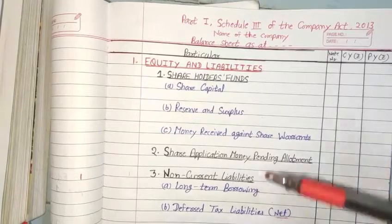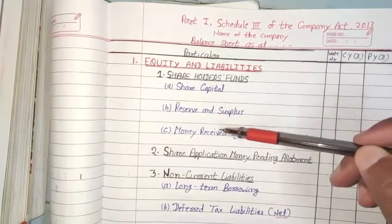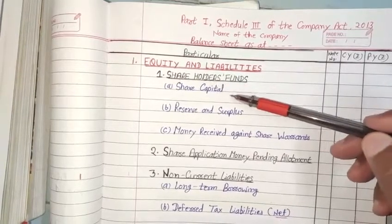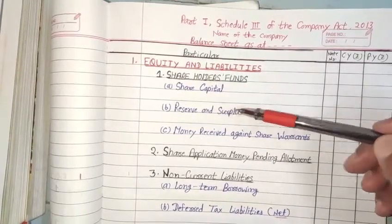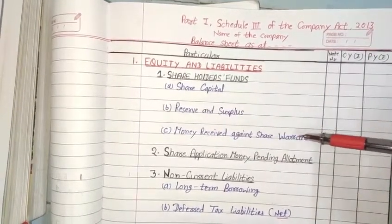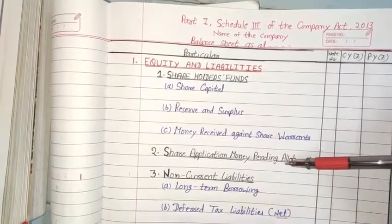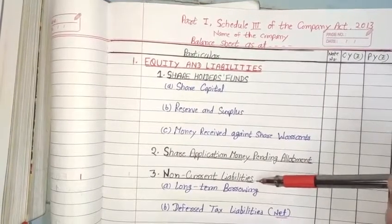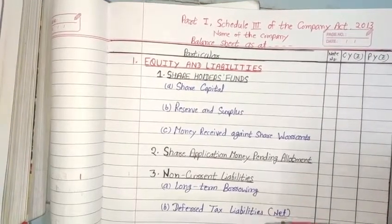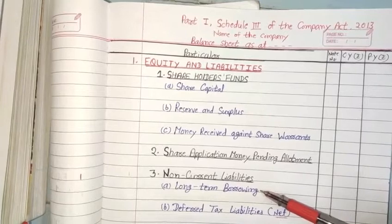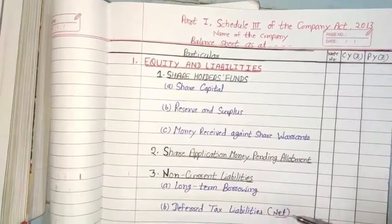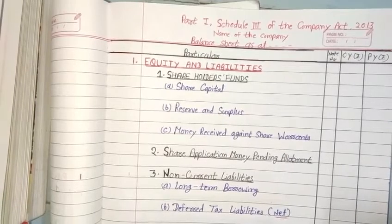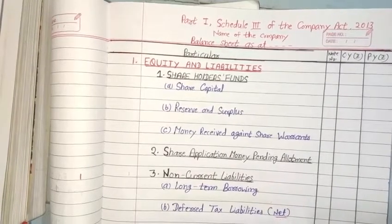After that, we have seen there are three sub-headings of Shareholder Fund: Share Capital, Reserve and Surplus, and Money Received against Share Warrant. There is no sub-heading of the second point. The third point is Non-Current Liability, which has four sub-headings: Non-Current Long-Term Borrowing, Deferred Tax Liability Net, Other Long-Term Liability, and Long-Term Provision.